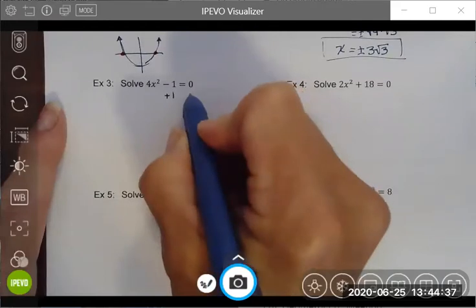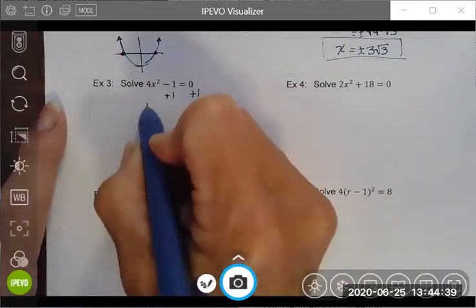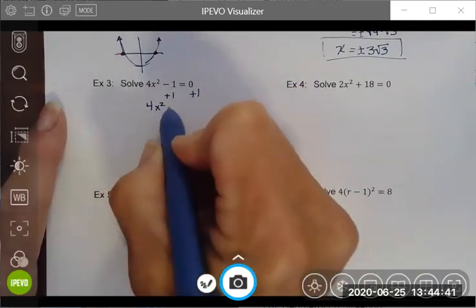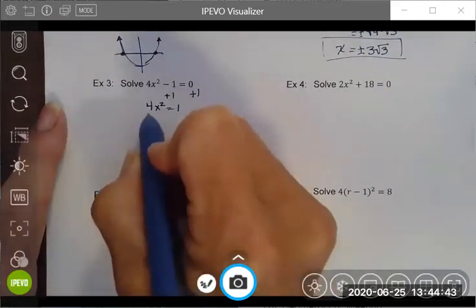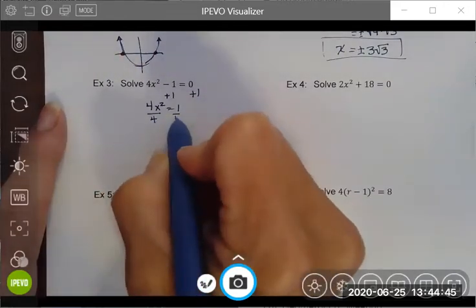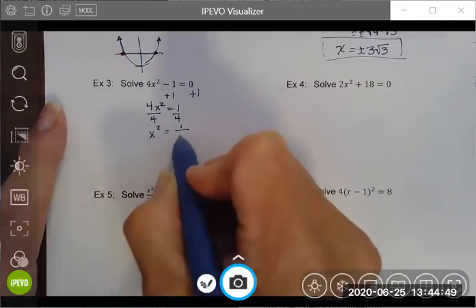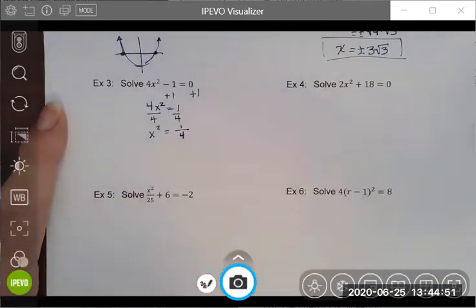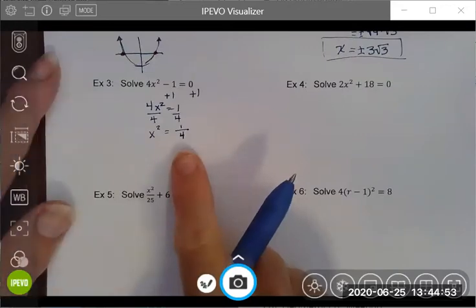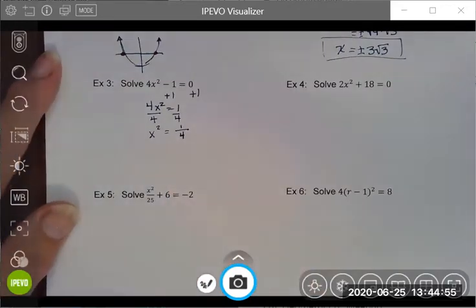First thing I'm going to do is isolate my x squared term. I'm going to do that by adding one to both sides. Then I'm going to divide both sides by four to get my x squared term to be alone. I am not going to write this as a decimal.